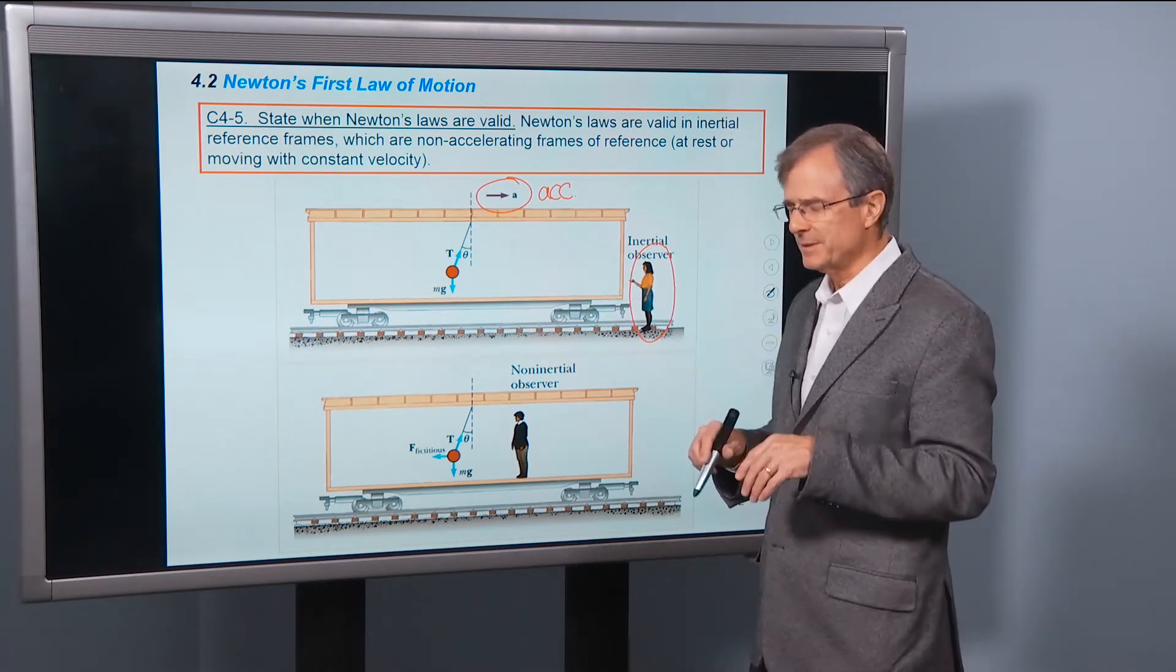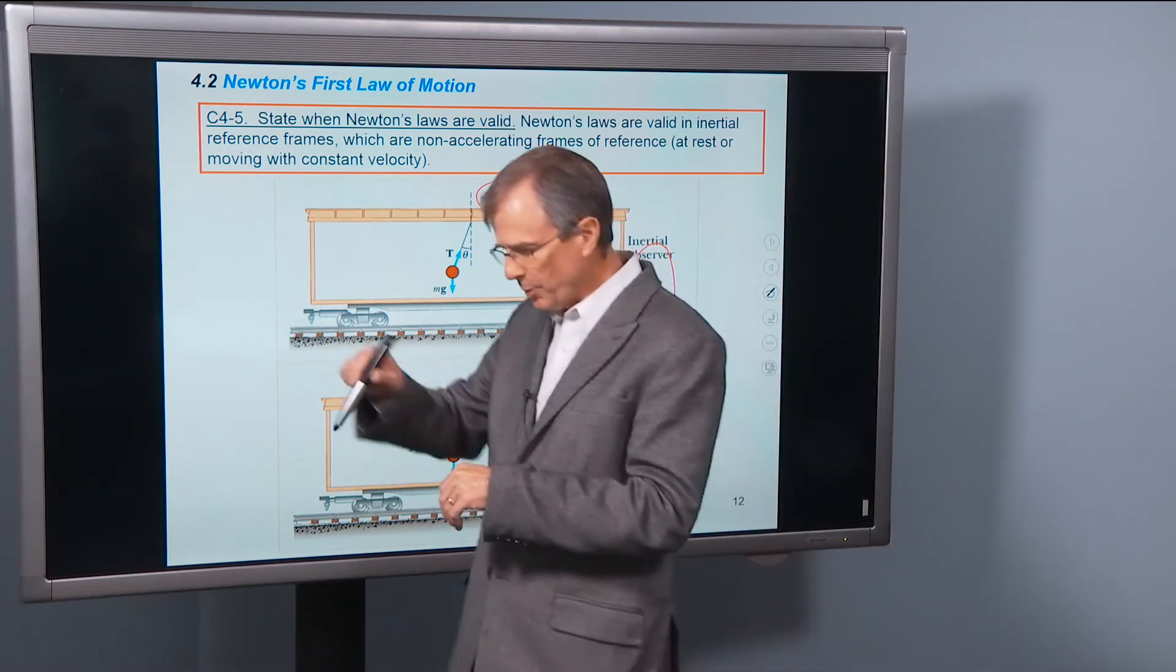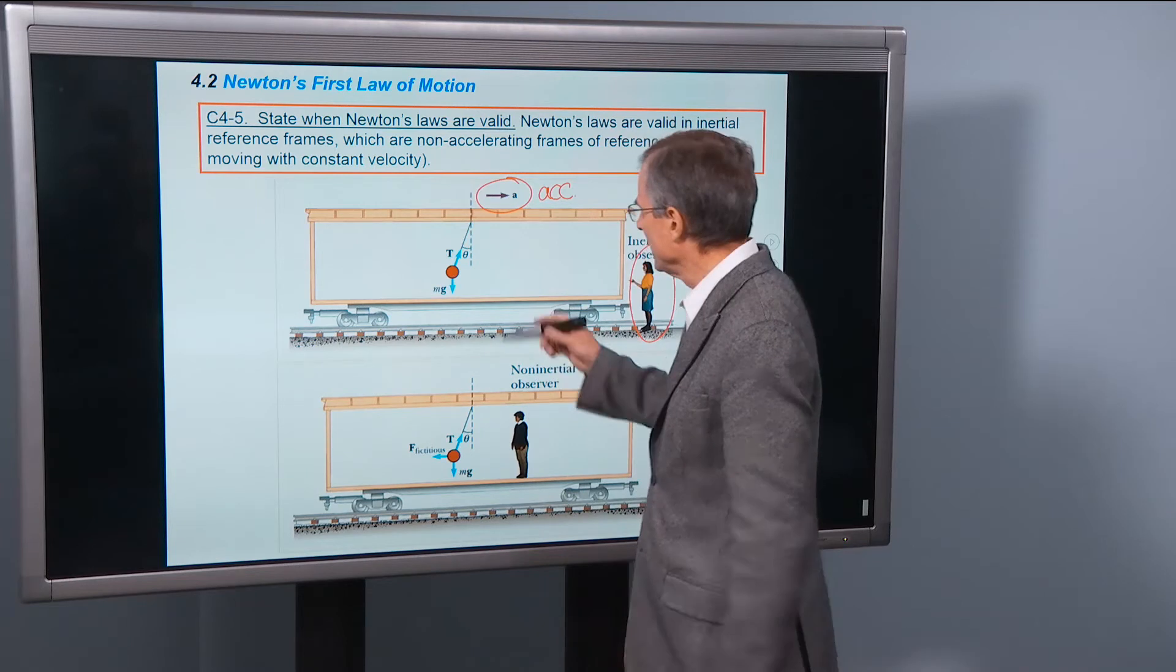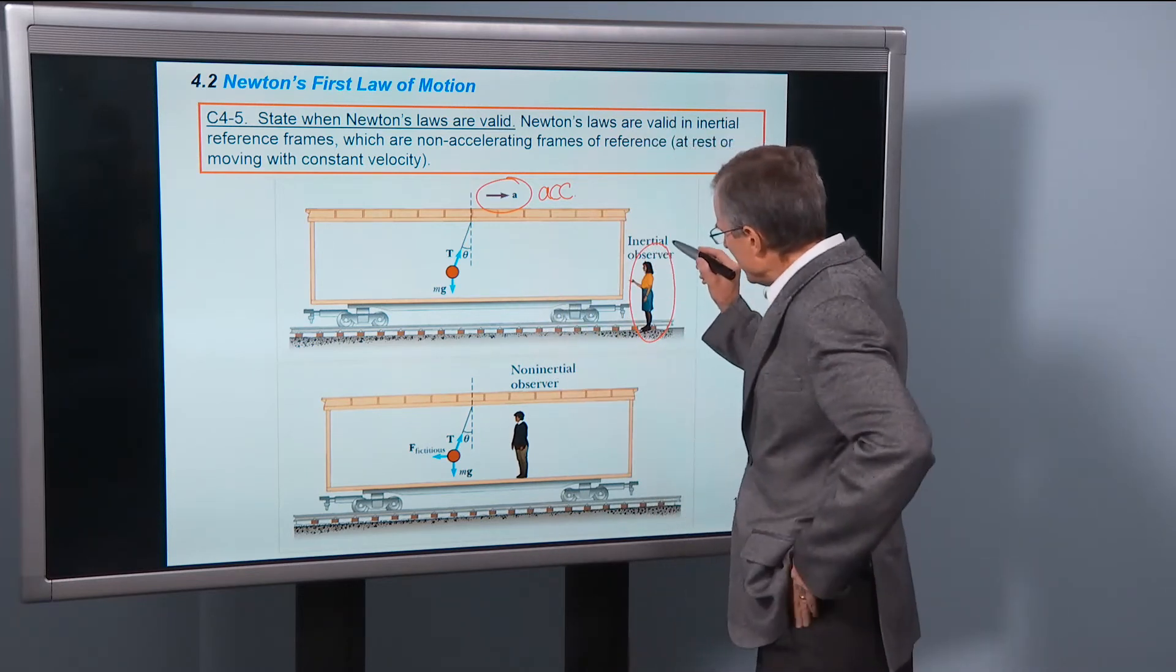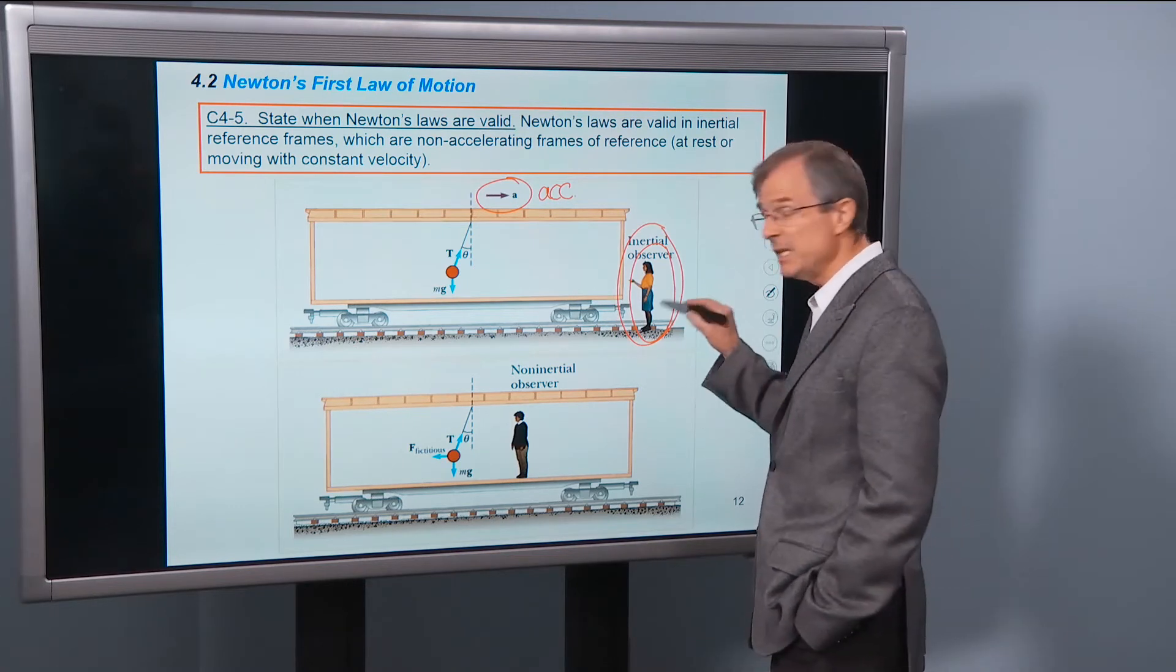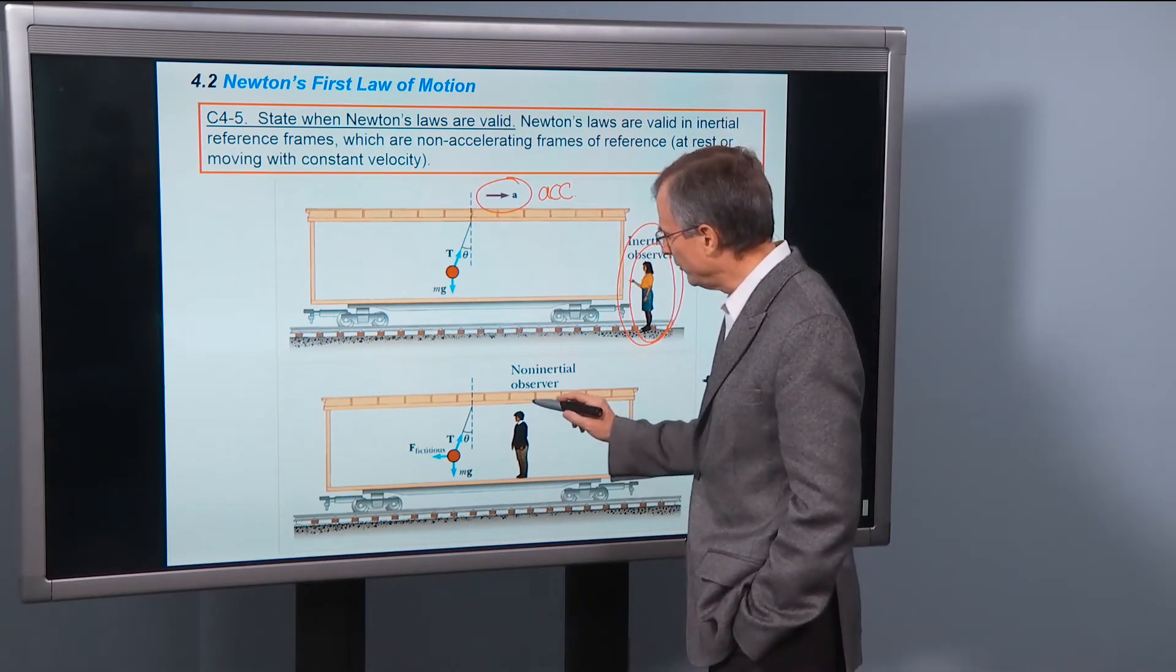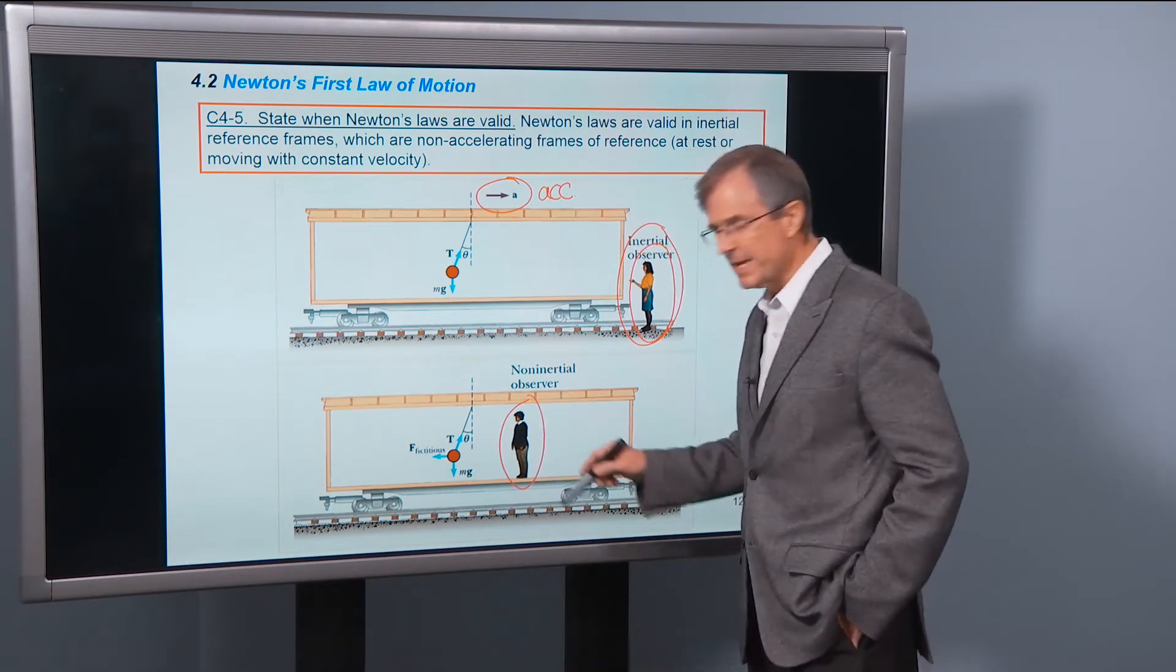And you've seen that before. You have a balloon in your car or something hanging. All balloon is a little bit different. But anything hanging from a ceiling, if you accelerate forward, it's going to kind of go backwards. So that's, her frame of reference is an inertial reference frame. It's not, she is not accelerating.